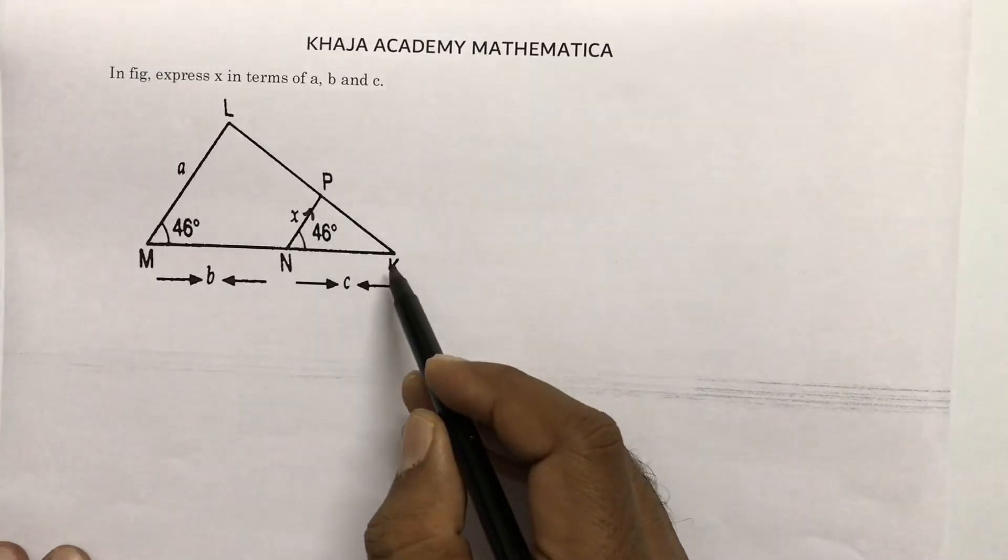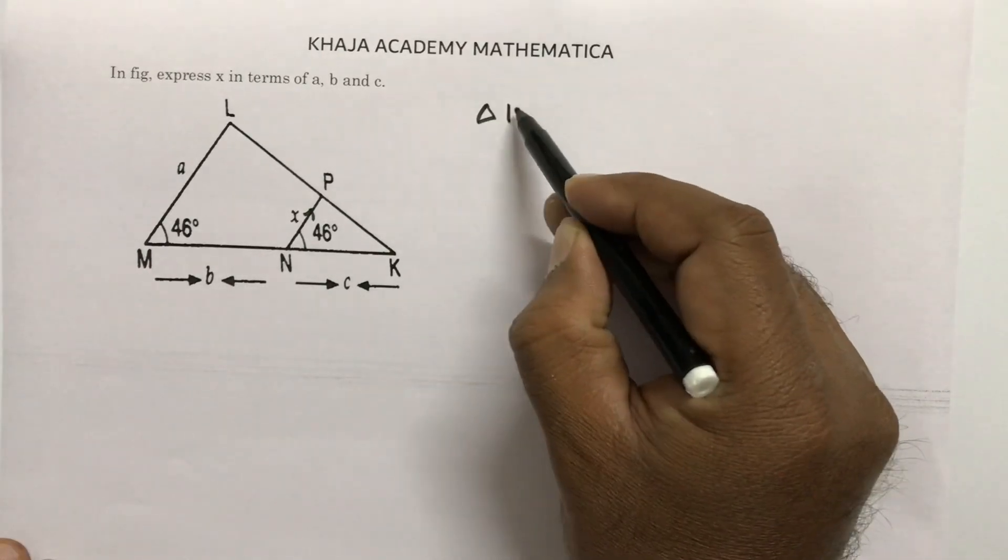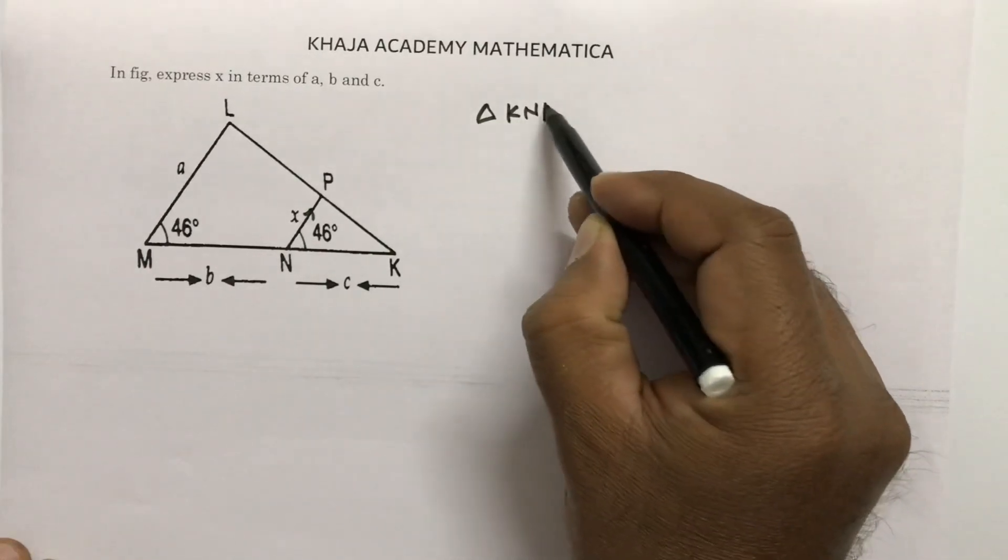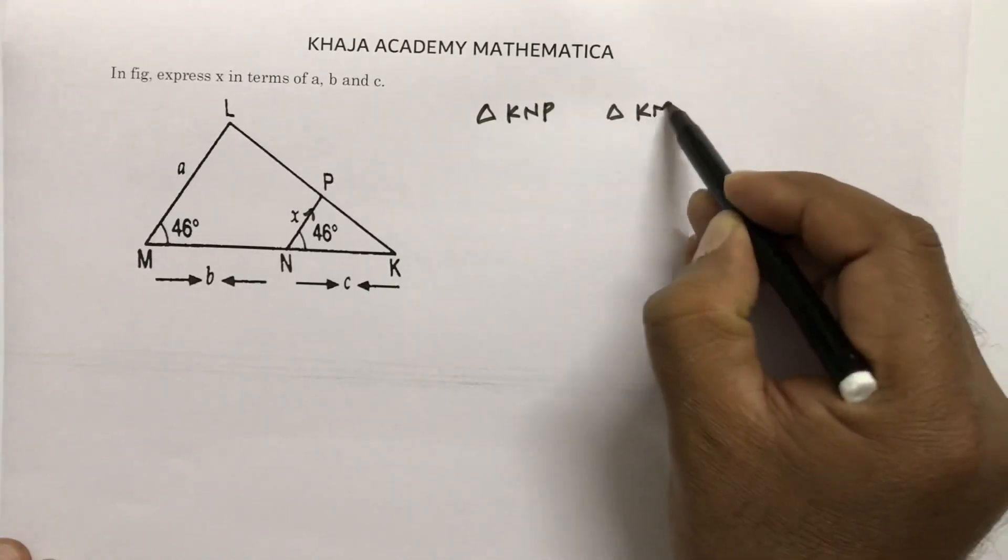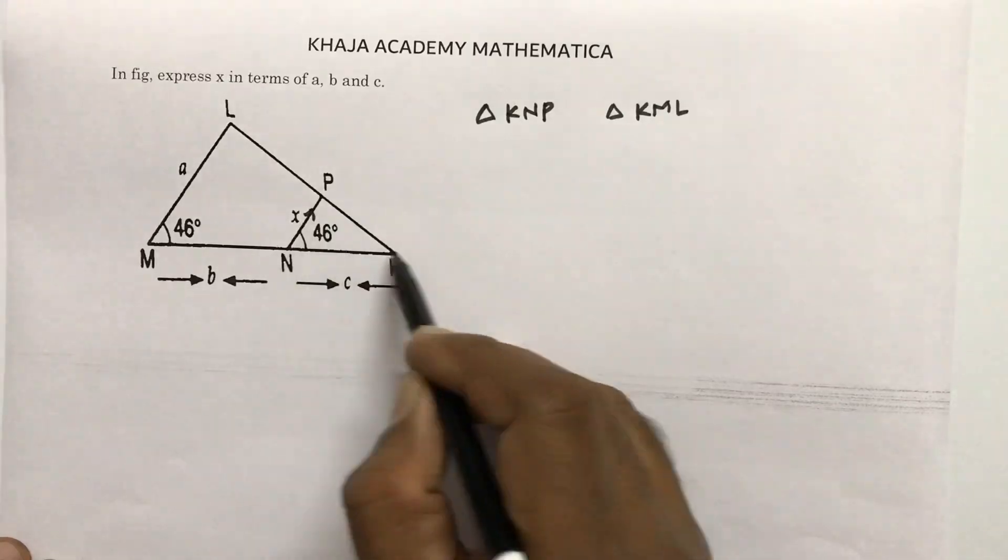Here I'll take two triangles: triangle KNP and triangle KML. So here in this small triangle and this big triangle...